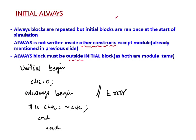Always Blocks are repeated — they act like a loop. But Initial Blocks run only once, and at the start of simulation. So when you start your simulation, the Initial Block is executed at that time.